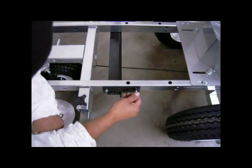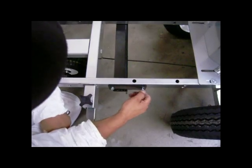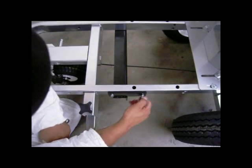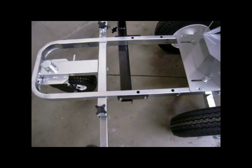Secure the lower mounting bracket to the striper frame using the provided bolts, washers, and lock washers, and tighten using a closed end wrench.